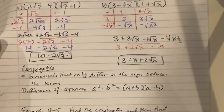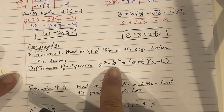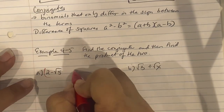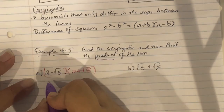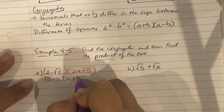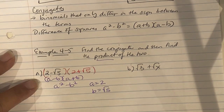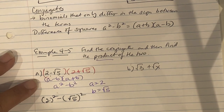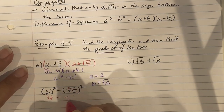Conjugates are binomials that only differ in the sign between the terms. Think of the difference of squares: a² minus b² equals (a + b)(a − b). For Example 4-5a, given 2 minus square root of 5, the conjugate is 2 plus square root of 5. The product uses a² minus b²: 2 squared minus (square root of 5) squared = 4 minus 5 = negative 1.